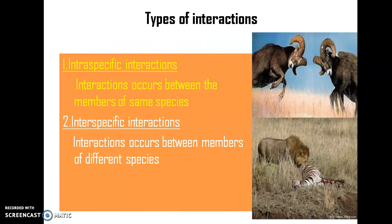Generally, two different types of interactions are seen: intraspecific interaction and interspecific interaction. In the case of intraspecific interaction, this involves the interaction between all the members belonging to one species. That means the interaction which is limited to or taking place within a single species is called an intraspecific interaction. Here in this picture, two mammals are interacting with each other — they belong to one species — this is an intraspecific interaction.